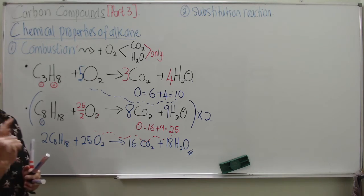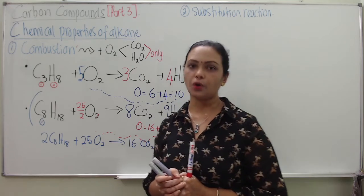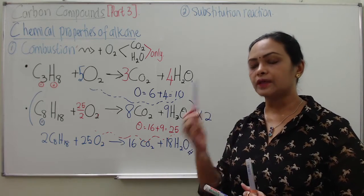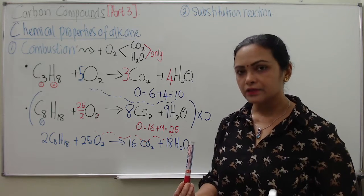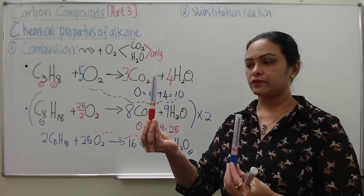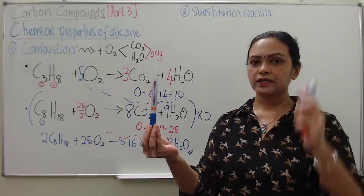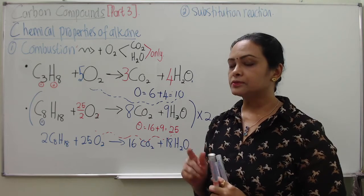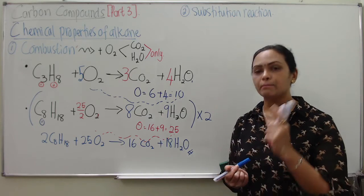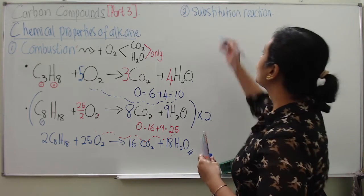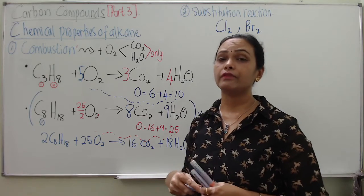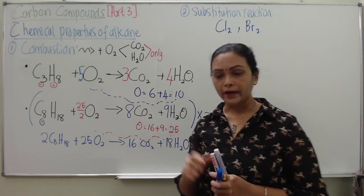This is an example of the first chemical property of alkane, which is combustion. Now let's go to substitution reaction. Substitute means something is taken away from its place and another substance takes its place — the place won't be empty. Substitution reaction is where the hydrogen atoms of an alkane are substituted by halogens, mainly chlorine or bromine atoms. Please don't use iodine because iodine is very passive compared to chlorine and bromine.